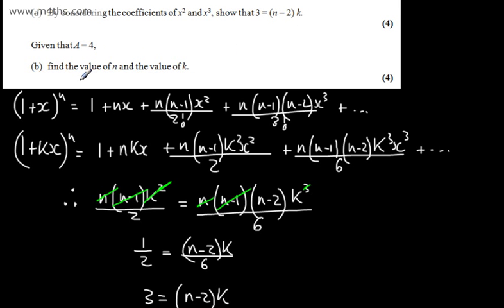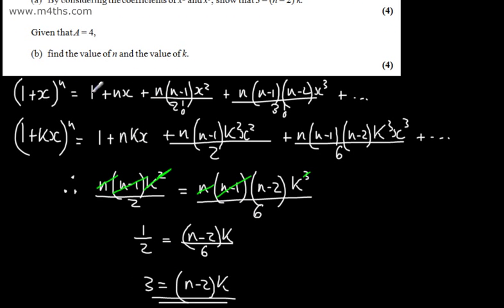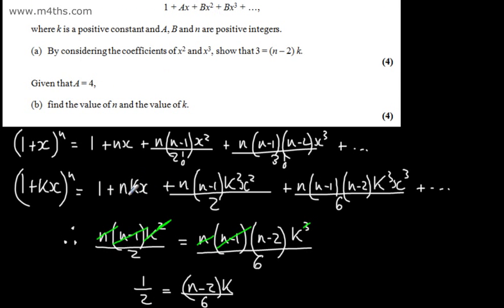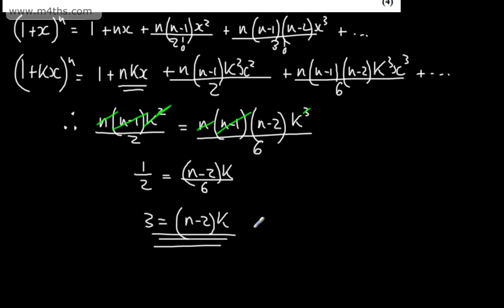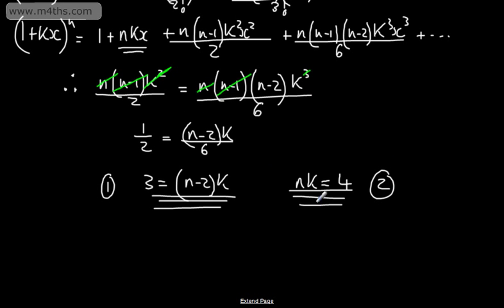For part b, we're given that a equals 4, so from the expansion the coefficient of x gives us nk equals 4. We now have two simultaneous equations: equation 1 is 3 equals (n−2)k, and equation 2 is nk equals 4.